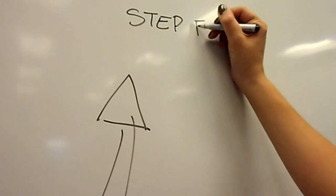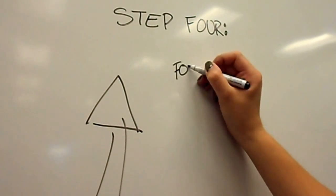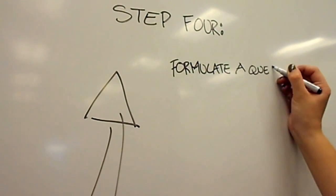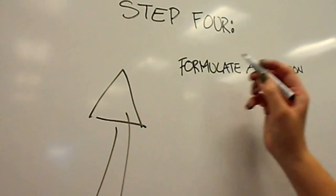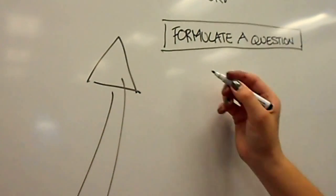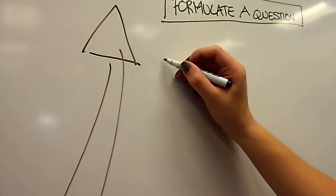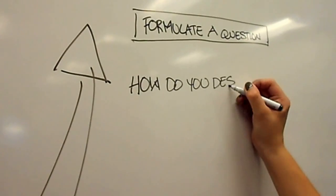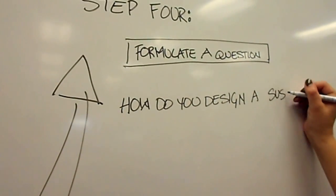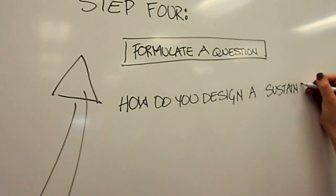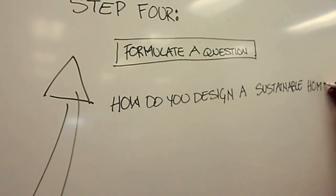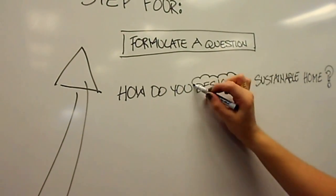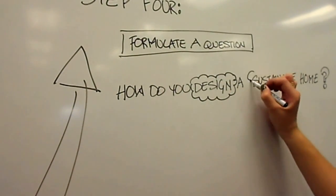Now that we have isolated factors and issues and have done some background reading, such as a literature review, we are now ready to restate the research problem as a researchable question. This is step four — formulate a question. Here is an example of a question that we have developed: How do you design a sustainable home?